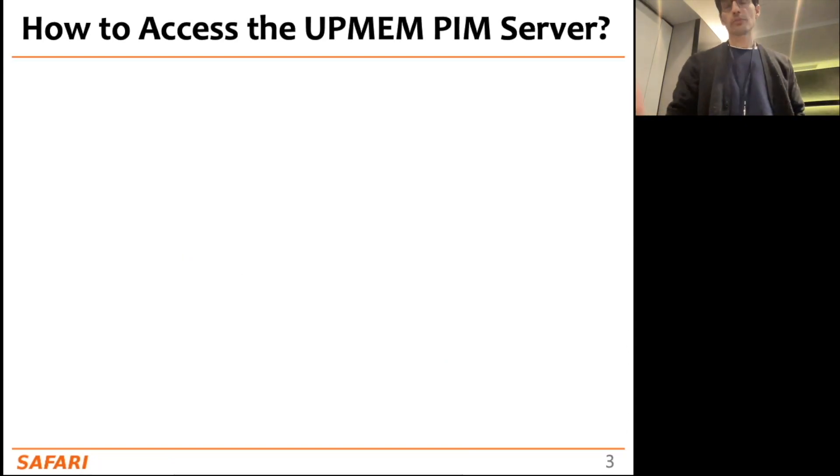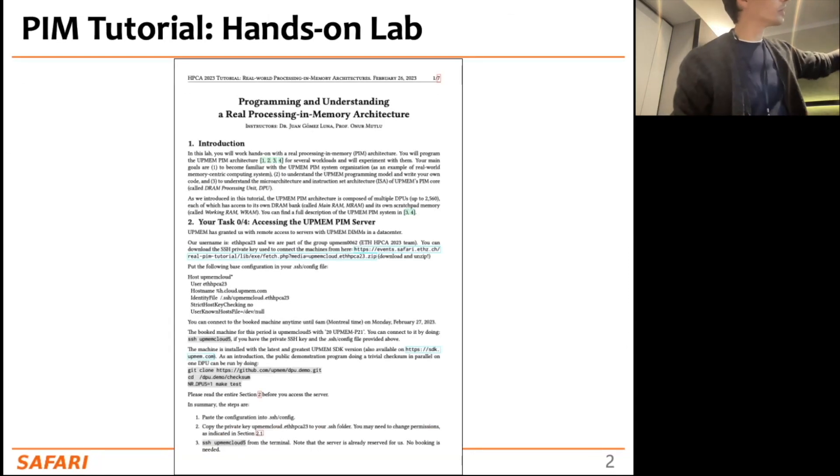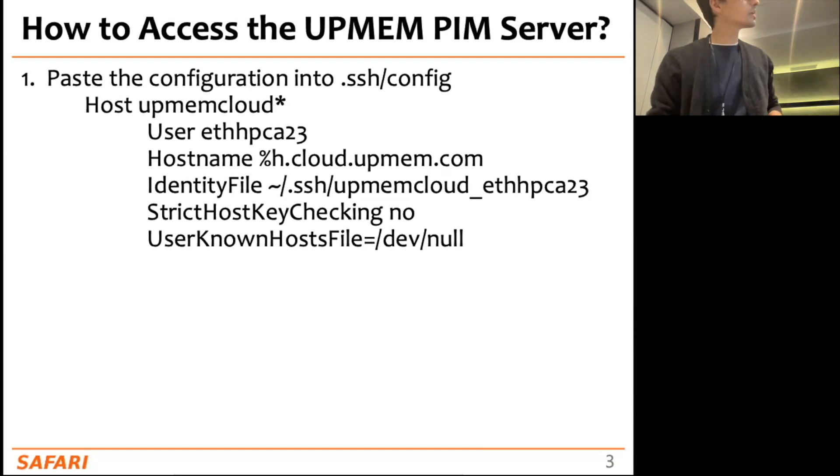From this handout, there's a linked zip file that contains the templates you need to use for the lab itself. As you can see in the beginning of the handout in section 2, there is the configuration that you have to paste in the config file in your .ssh folder. The user is ethhpca23, and upmemcloud_ethhpca23 is the config file that you can also download from the website.